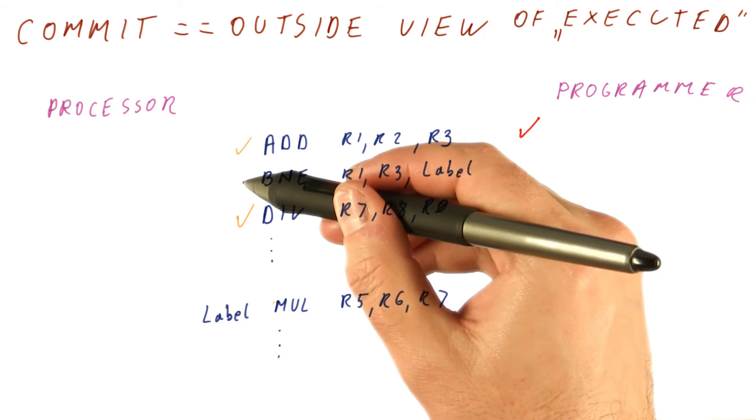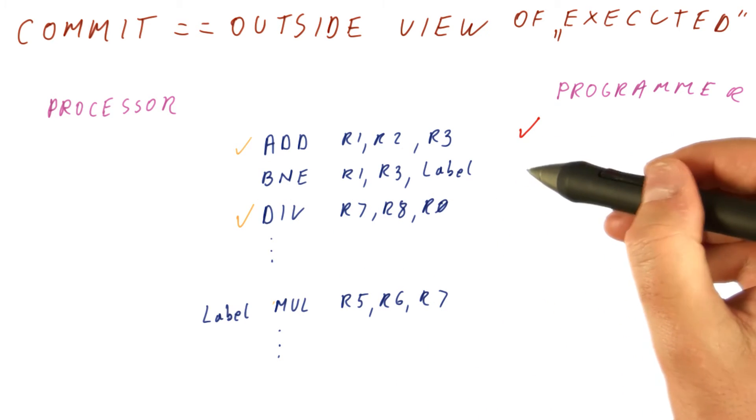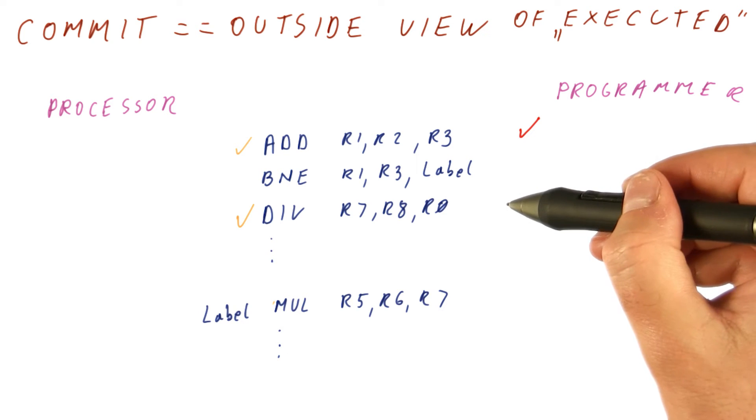If the program finishes this, until the processor finishes this here, the programmer is not going to see that as executed. So the programmer never really sees, for example, this divide,